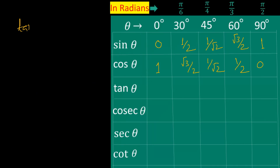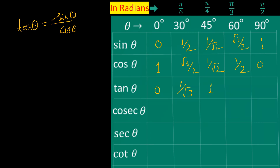Now we know tan θ is equal to sin θ by cos θ. Therefore, tan 0° is equal to sin 0° by cos 0°, which is 0 by 1, that is 0. Tan 30° is equal to half over root 3 by 2, which is equal to 1 by root 3. Tan 60° is equal to root 3 by 2 over half, that is root 3. And tan 90° is equal to 1 by 0, which is not defined, so we write it with the undefined symbol.